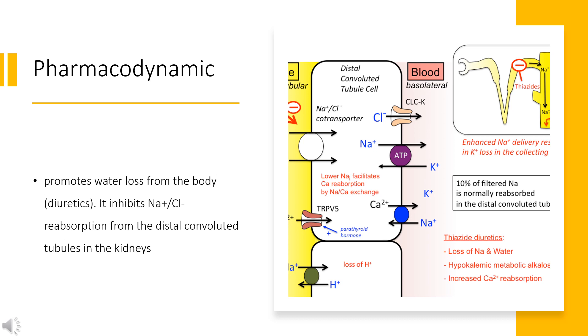Thiazides also cause loss of potassium and an increase in serum uric acid. Thiazides are often used to treat hypertension, but their hypotensive effects are not necessarily due to their diuretic activity.